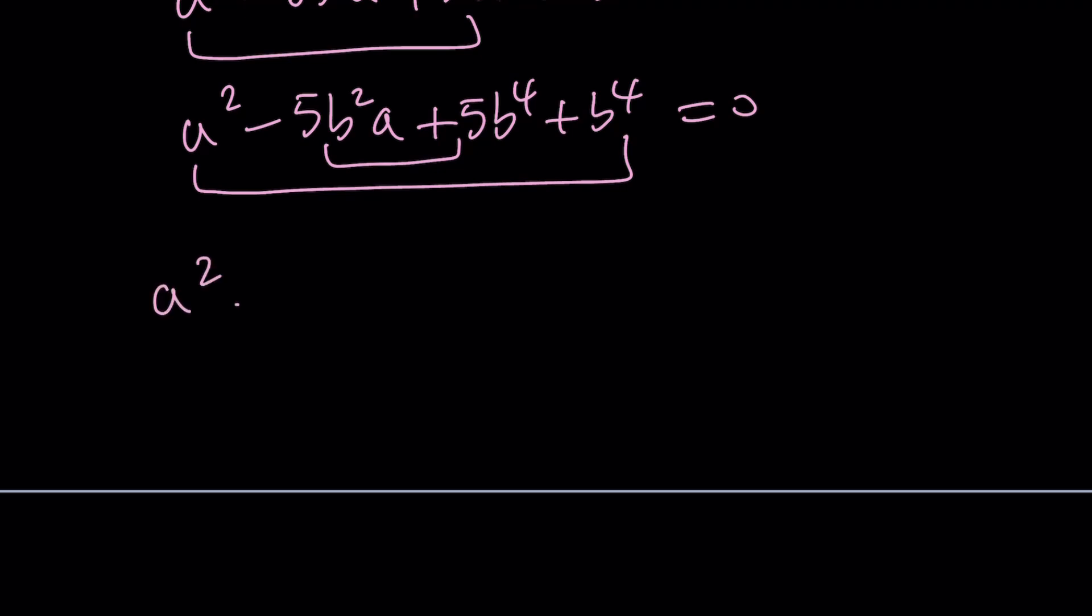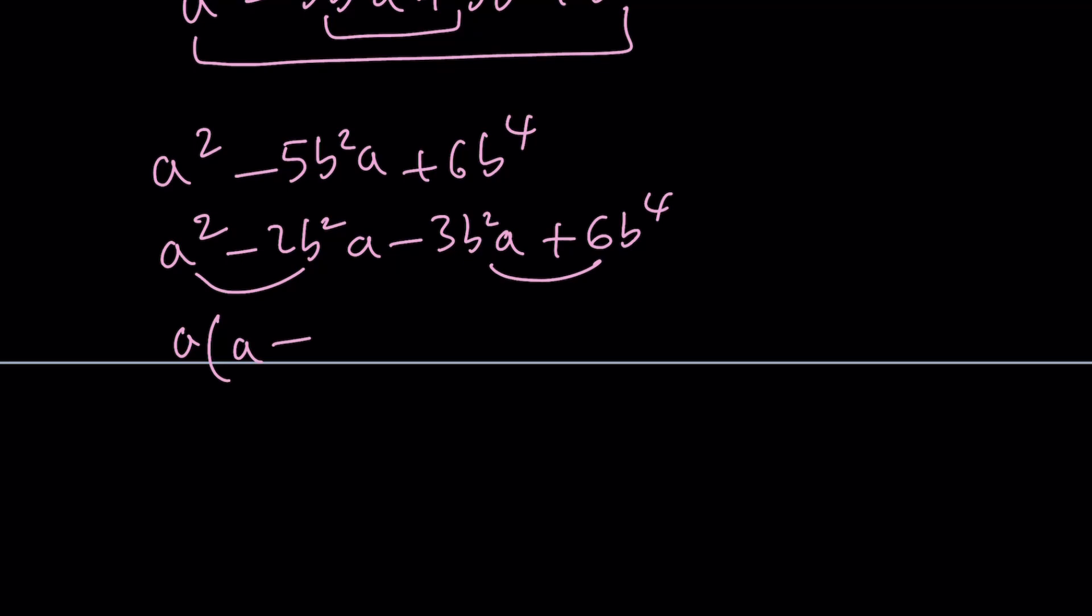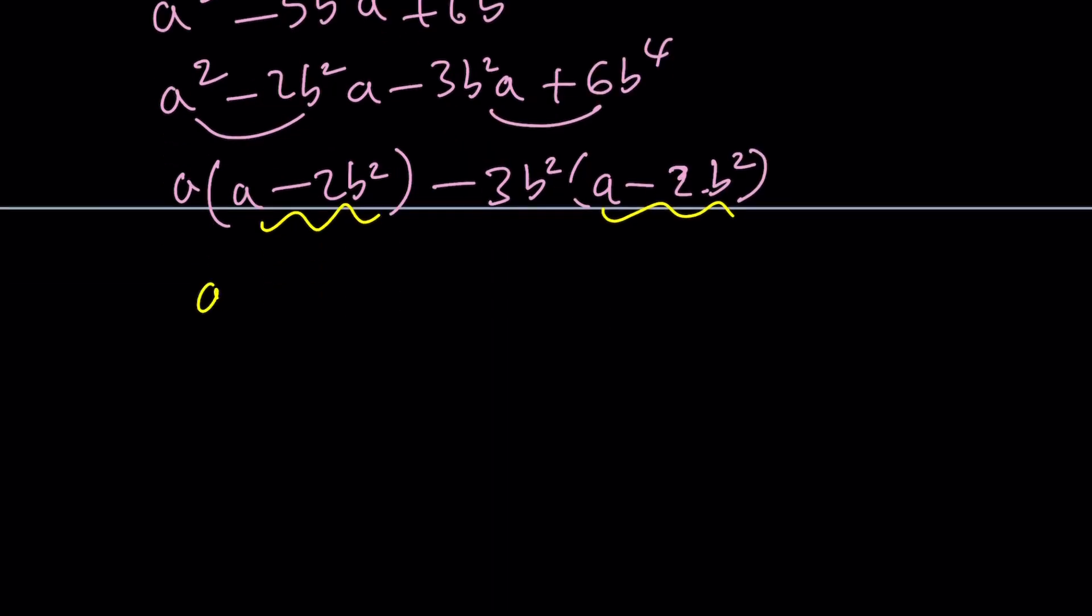a squared minus 5b squared a plus 6b to the 4th. Now here's the trick. We're going to break down the negative 5 into negative 2 and negative 3. And that will actually do the trick. We can get a times a minus 2b squared minus 3b squared times a minus 2b squared. Great. So this gives us a common factor. Write it as a minus 2b squared multiply by a minus 3b squared and set it equal to 0.